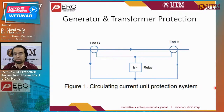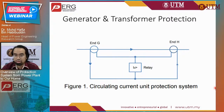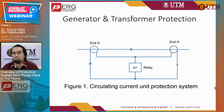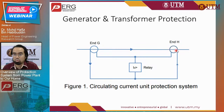I'll start by discussing generator and transformer protection — how the transformer and generator are protected. If you have an electrical engineering background, you know Kirchhoff's current law: current going in must equal current going out. With that, we measure the current that goes into the equipment — in this case generator or transformer — and the current that comes out. If the currents agree, it means it is working under good condition with no fault. If the input and output do not agree, it indicates a faulty system.